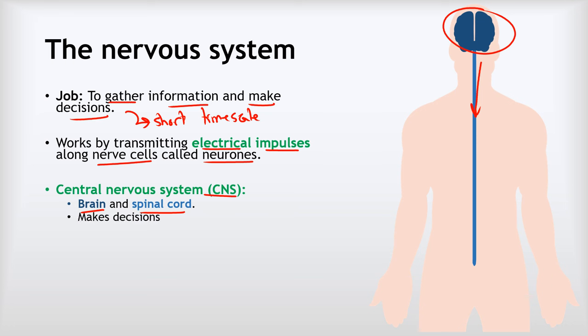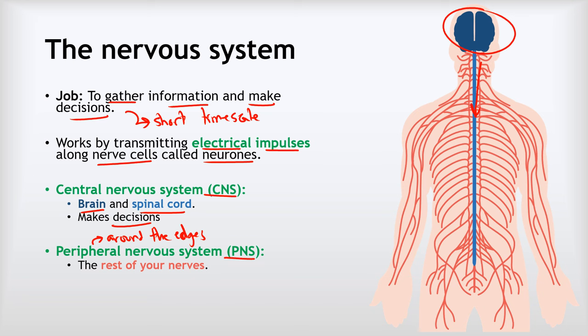The job of the central nervous system is to make decisions. It's constantly receiving information from our senses, processing it, and deciding whether it can be ignored or whether we should act on it. The other part of the nervous system is the peripheral nervous system, or PNS. The word peripheral just means something like 'around the edges,' so it's really all of the nerves except for the central nervous system. You can see hundreds of nerve fibres running all the way through our body — gathering information from our senses and sending it towards the CNS, but also sending decisions from the CNS back to our muscles and other effectors to make actions happen.